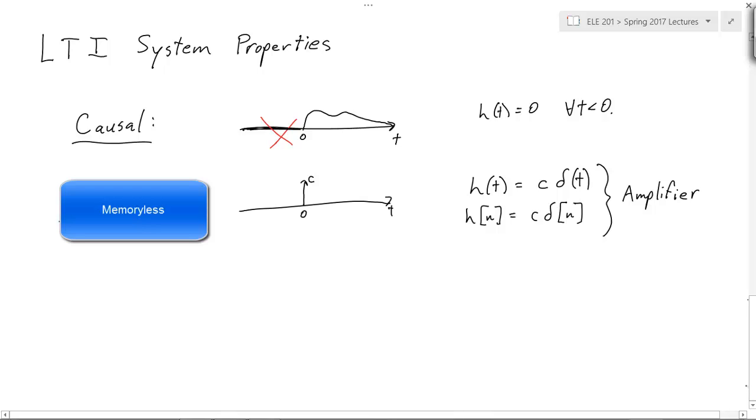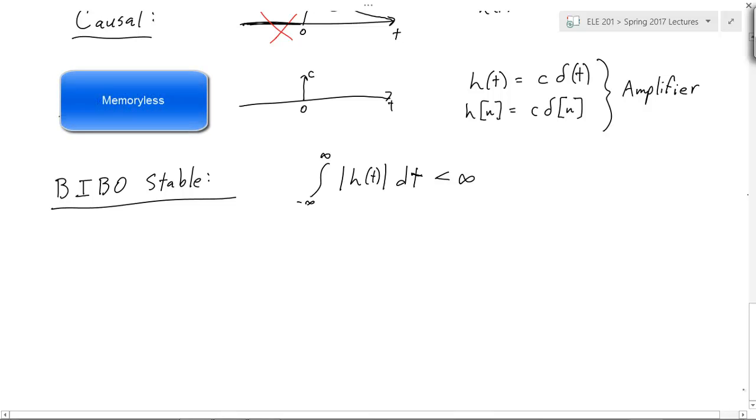Now, keep in mind, these are properties we're assuming for this system is LTI. If the system wasn't LTI, of course, you can have more sophisticated memoryless processes or causal systems. Okay, here's a nice one. What about stable? We have this BIBO stable, the bounded input, bounded output stable. So, if it's an LTI system, there's something very cool about the impulse response that will tell you if it's stable or not.